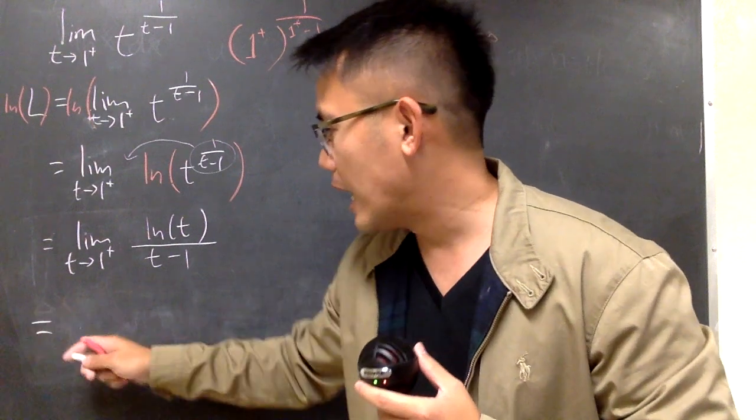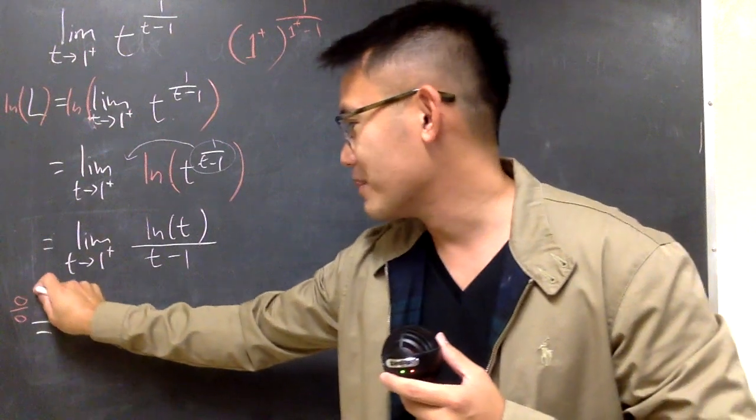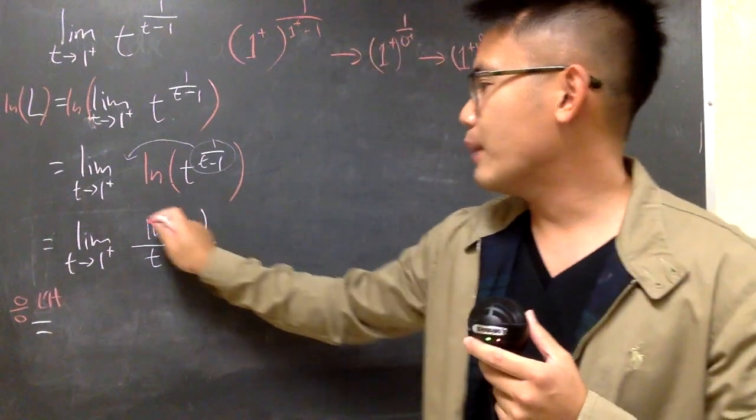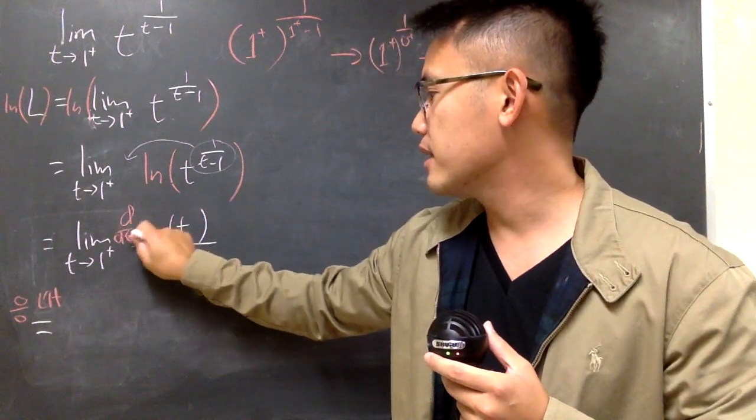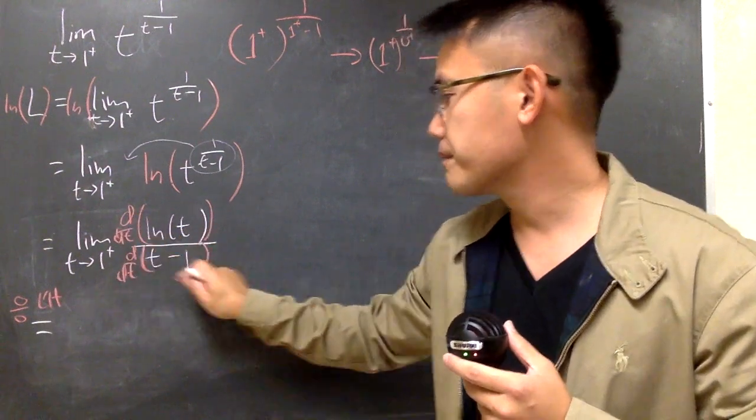So I will just write down, this is the 0 over 0 situation, we can apply L'Hôpital's rule, and I will just have to differentiate the top and differentiate the bottom.